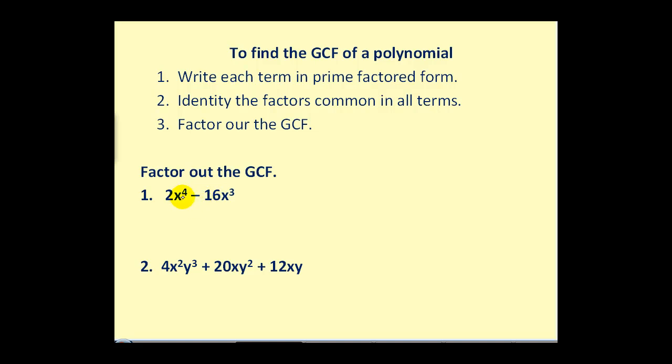We can rewrite 2x to the fourth as 2 times 4 factors of x, and 16x cubed in prime factored form would be 4 factors of 2 and 3 factors of x. Now, we circle the factors these two terms have in common. They both have a factor of 2, and they both have 3 factors of x.